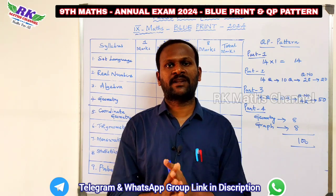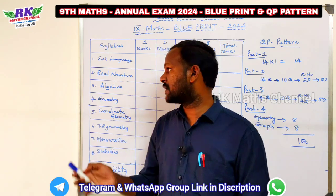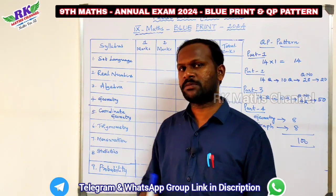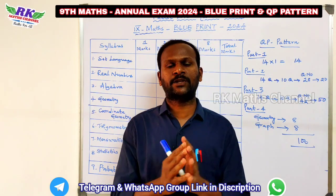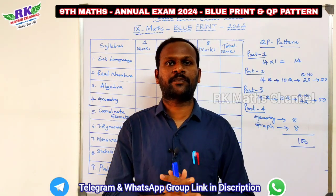The Annual Exam covers the overall syllabus. In total, there are 9 units up to probability — 9 units — and the question paper is the same.